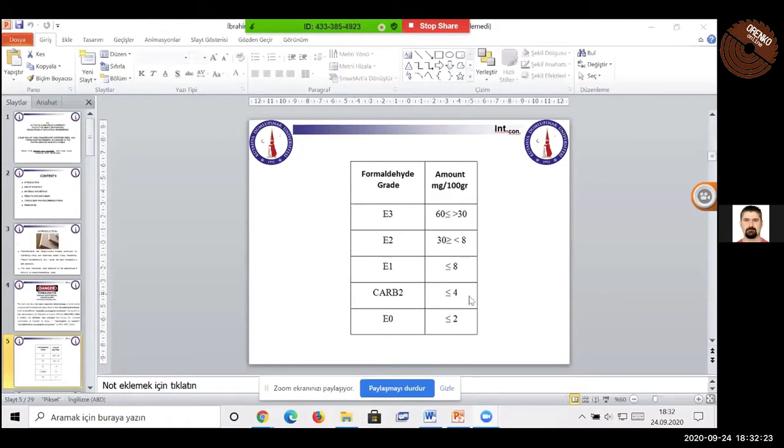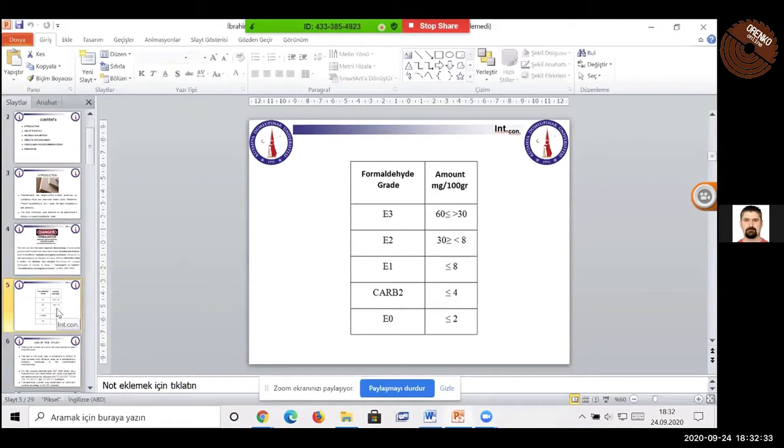I just want to show you, for a month, milligram per 100 gram. The aim of the study was to determine the effect of UREP powders with different sizes as formaldehyde emission scavengers in particle board manufacturing. And also we produced three layer particle boards, and formaldehyde content was determined by the perforator method according to the EN 120 standards.